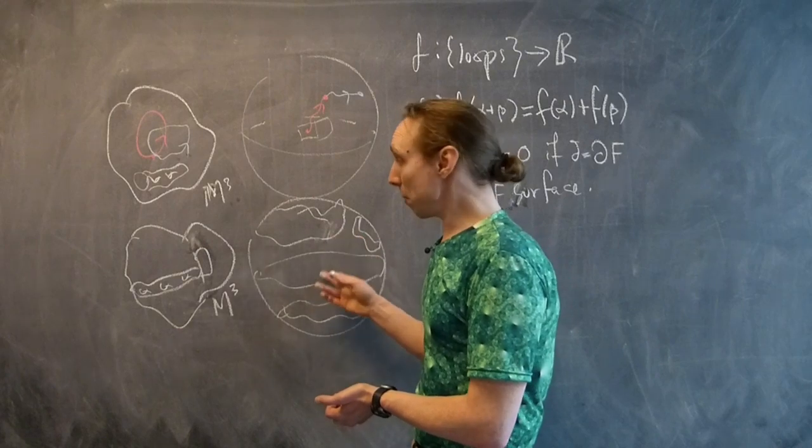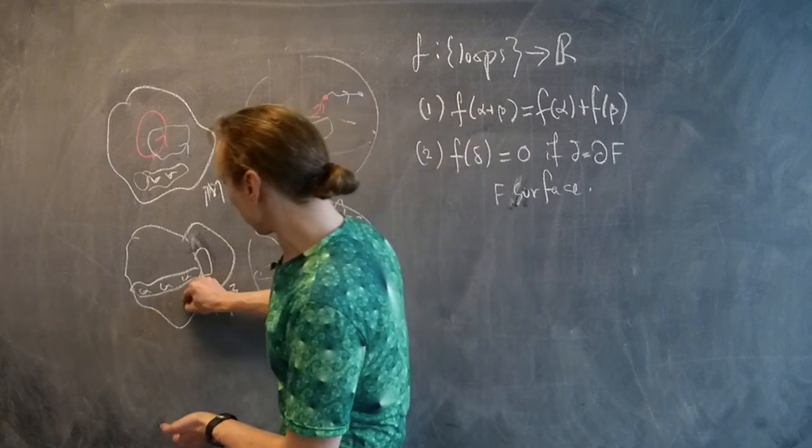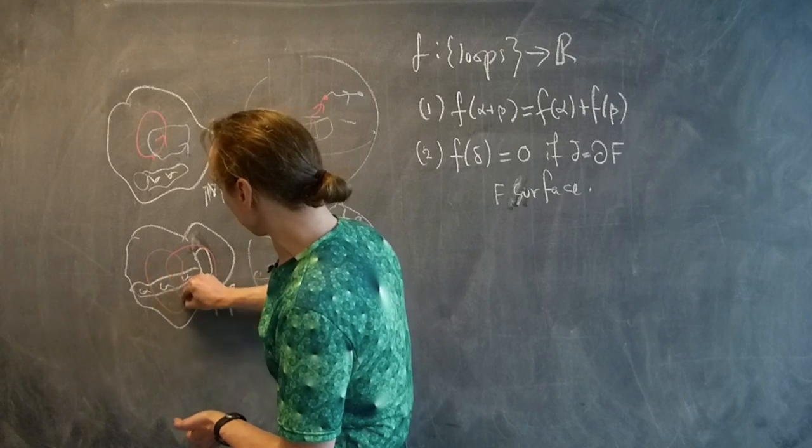So what we do is anytime we have a path in the universal cover, we can see how many times it meets these surfaces and count with a sign. So if we have a loop downstairs here, one, two, and then back like so,